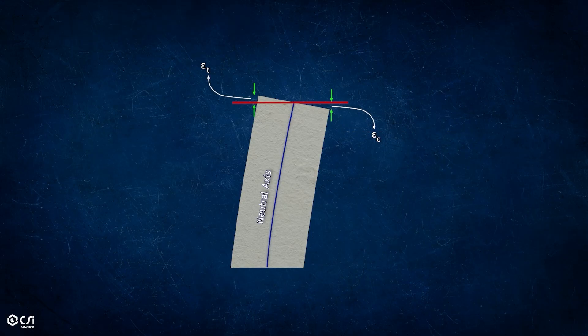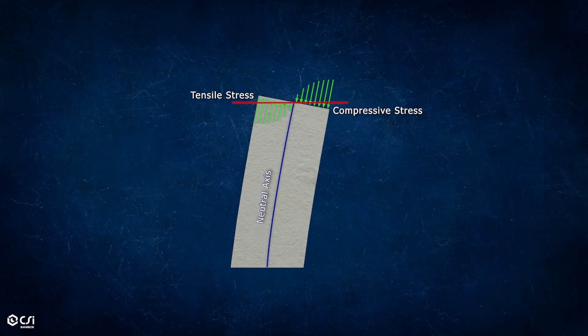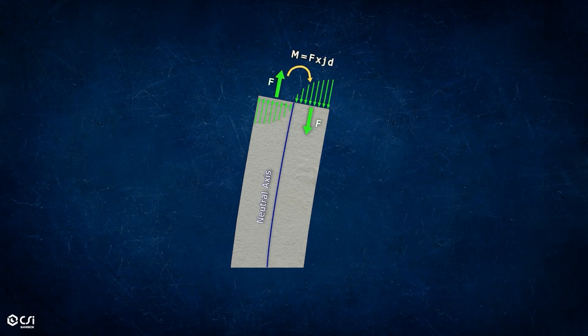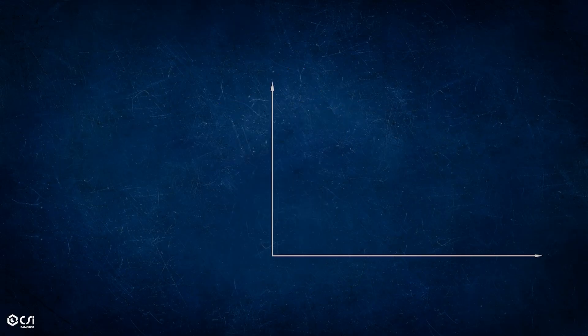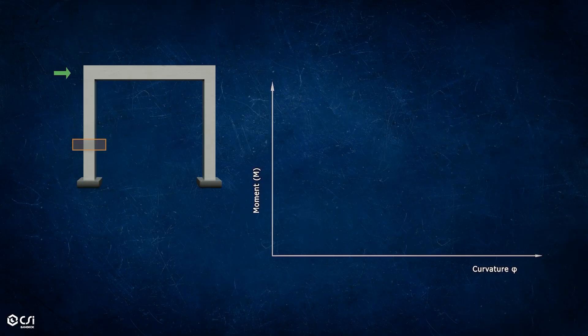This cross-section rotation is called curvature, which affects tensile and compressive stresses. This curvature capacity is a critical contributor to the performance of frames under lateral loads.